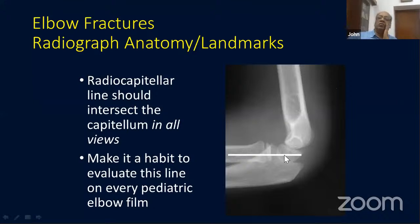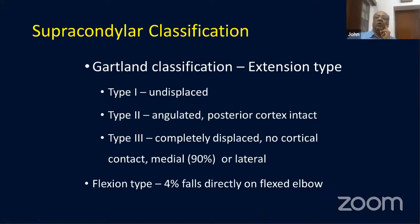Always evaluate these lines when you're looking at your X-rays. The classification most often followed is the Gartland type, where you have Type 1, which is undisplaced or minimally displaced.